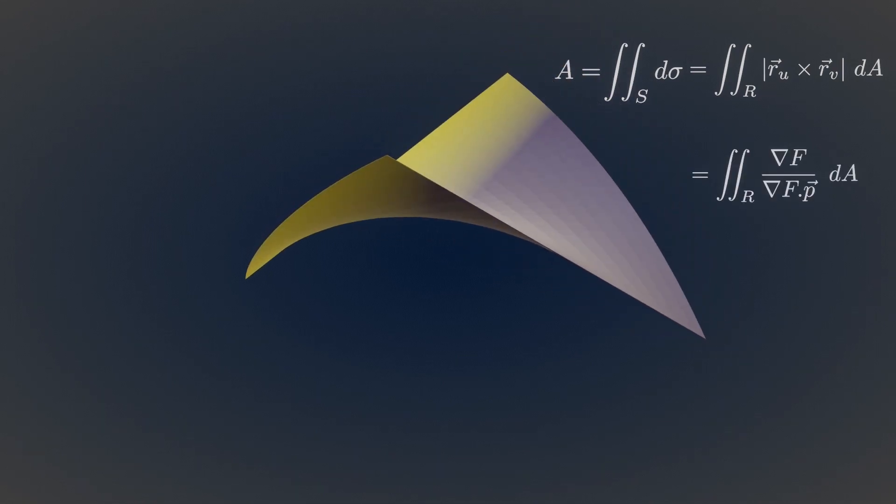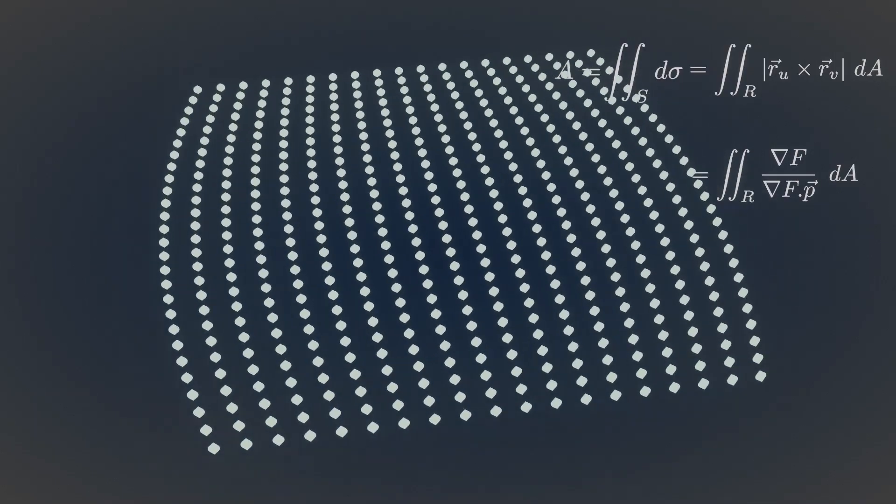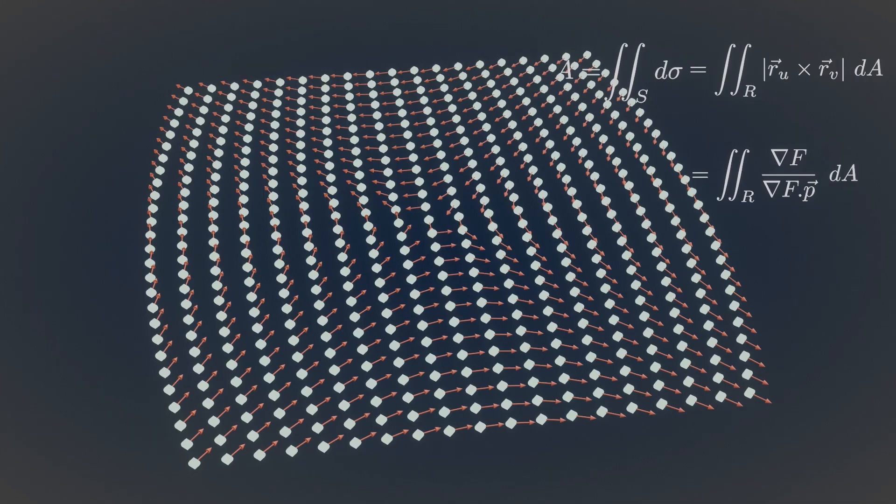Or if the surface is not parametrized, then we can convert it to an implicit function, project the function into the plane, capture its gradient vectors, and compute the area by this formula.